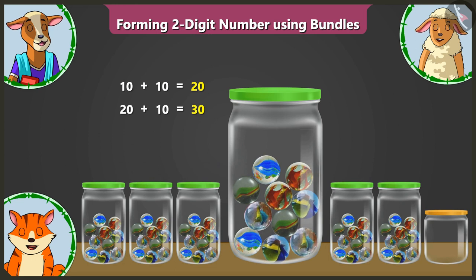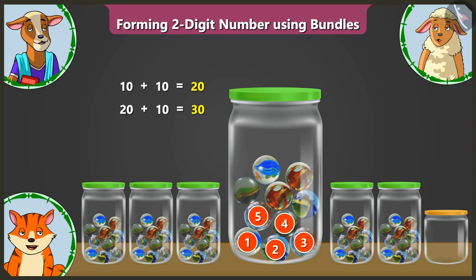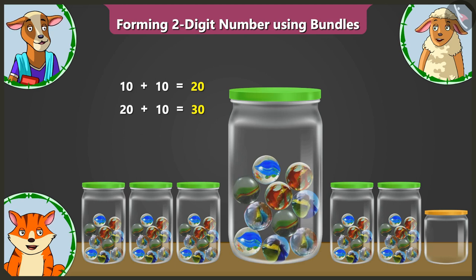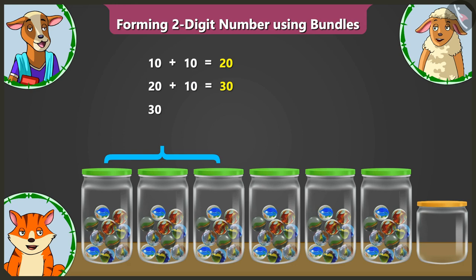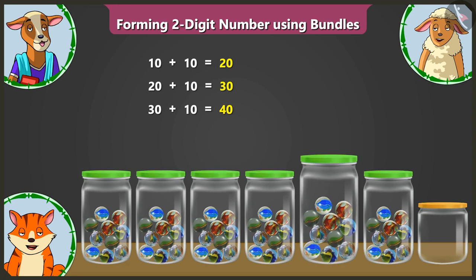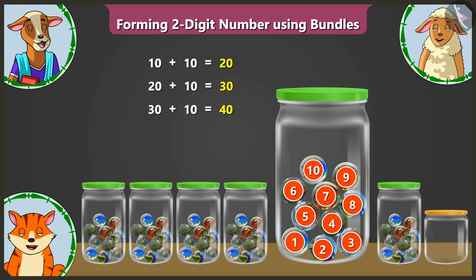Now, Lily, you count the marbles in the fourth jar. In the fourth jar there are 1, 2, 3, 4, 5, 6, 7, 8, 9 and 10 marbles. Absolutely right. So these are 10 and 10 — 20, 20 and 10 — 30, 30 and 10 — 40. Four groups of 10s. This 5th jar also has 10 marbles.